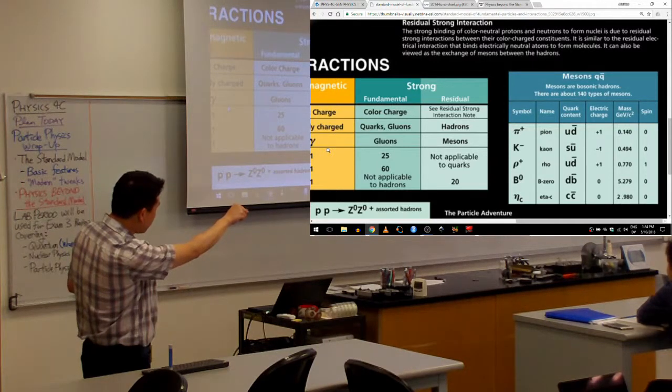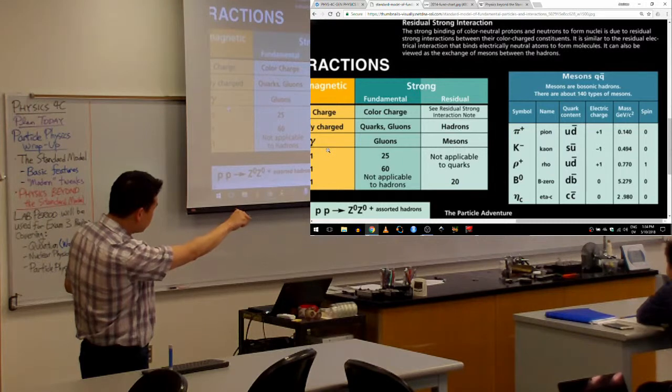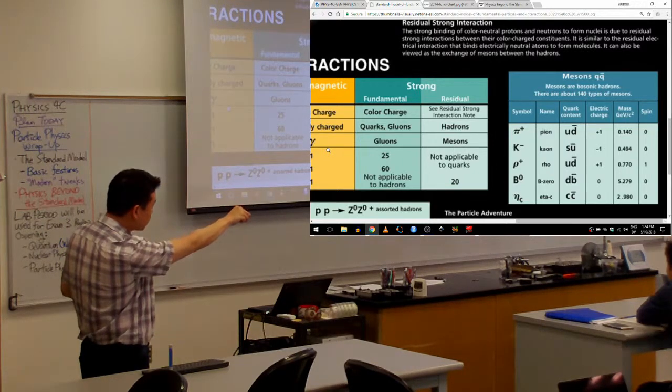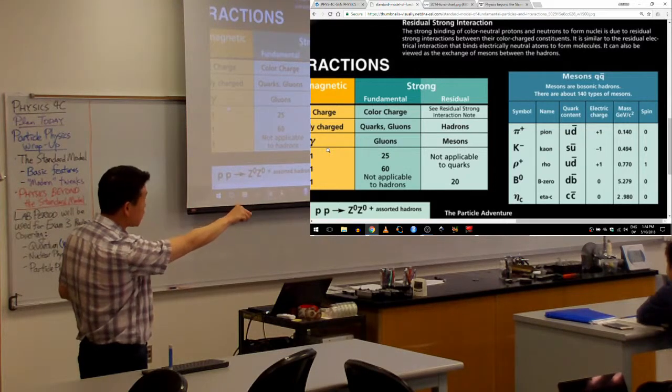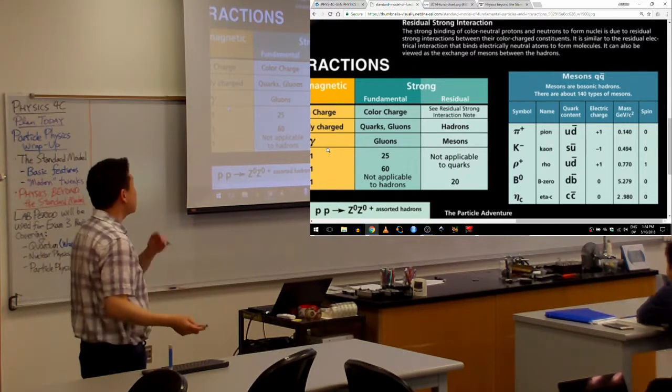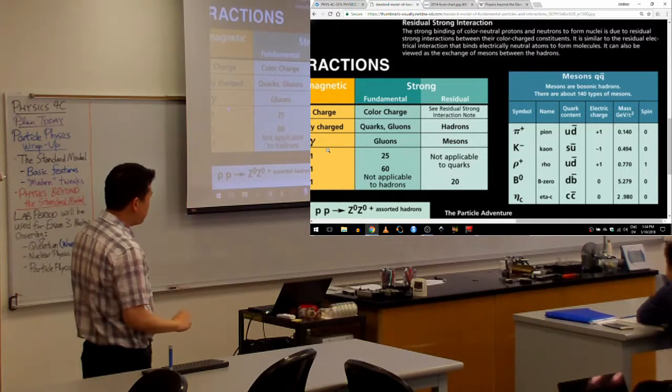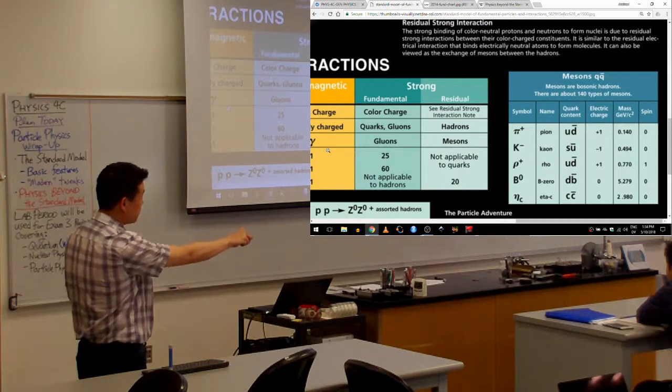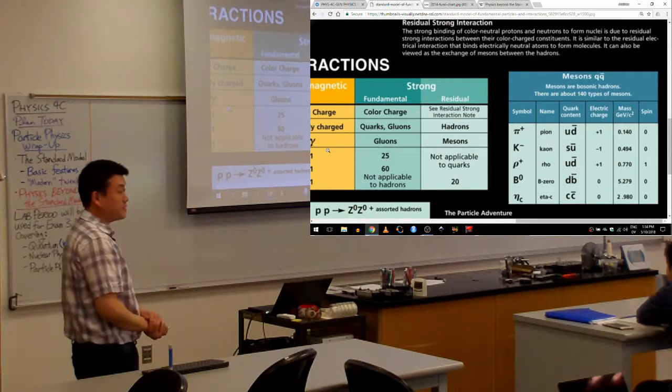When you look at pion and rho, they are very similar, right? They both have the same quark content. So they have the same charge. Quark content determines what electric charge they can have. But they have two key differences. Rho is heavier, and it has a different spin. It's spin one instead of spin zero.